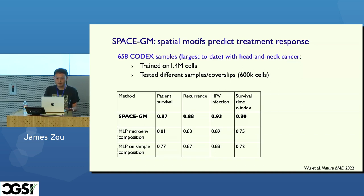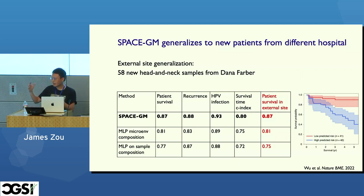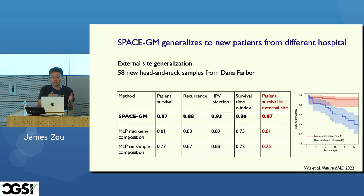A key question for machine learning models is how well they generalize to data from different hospitals. Our collaborators collected entirely independent samples — data was trained on patients from Stanford and Pittsburgh, then validated on additional samples from Dana-Farber, collected and imaged using different protocols. This truly held-out external validation set showed the model's predictions generalize quite well to entirely different hospitals and patients, giving confidence that the identified microenvironments are capturing intrinsic biology common across different patients.